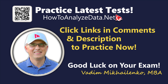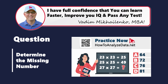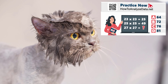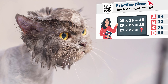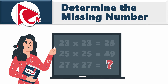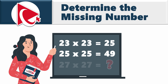Navigating this question is like convincing a cat to take a bath — a tricky endeavor, but once you soak in the solution, it's a clean success. This assessment might be measuring our ability to handle slippery math expressions. You are presented with three of those expressions. The first one is 23 multiplied by 23 equals 25. The second one is 25 multiplied by 25 equals 49. And the third one is where you need to find the missing number: 27 by 27.